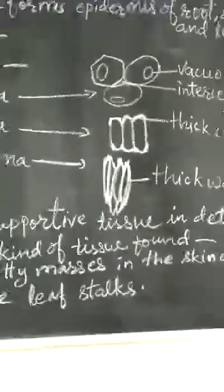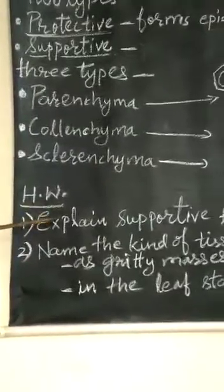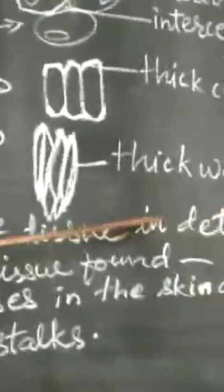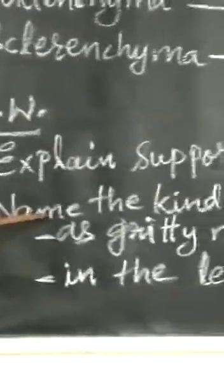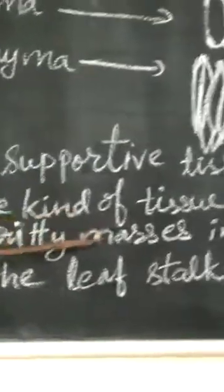Today's homework: explain supportive tissue in detail. Second, name the kind of tissue found as gritty masses in the skin of pear and in the leaf stalks.